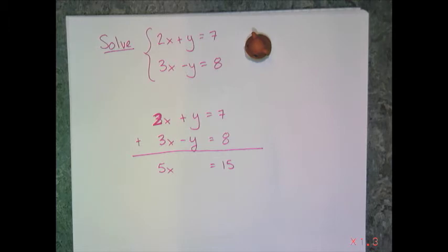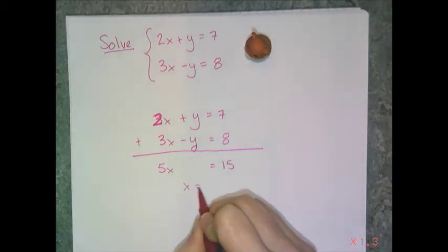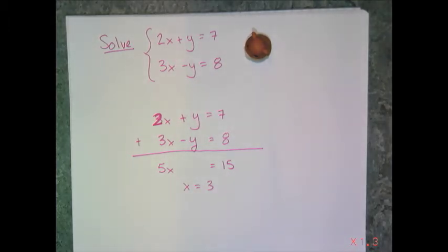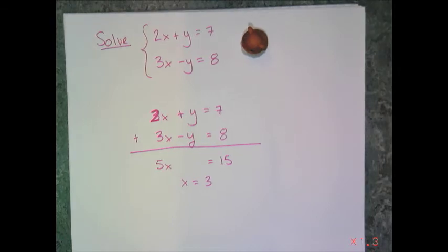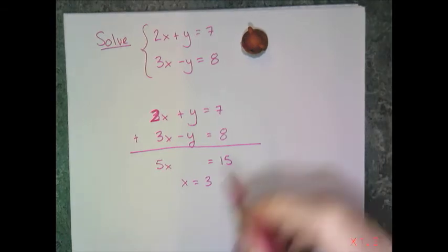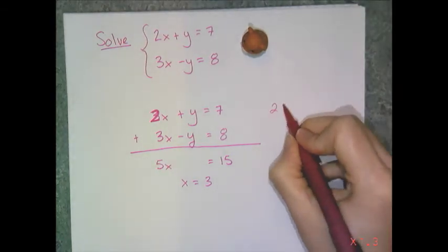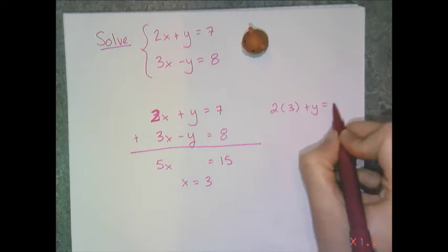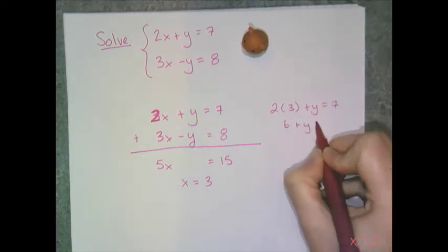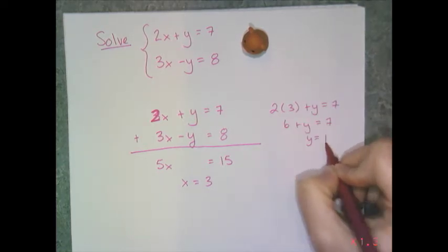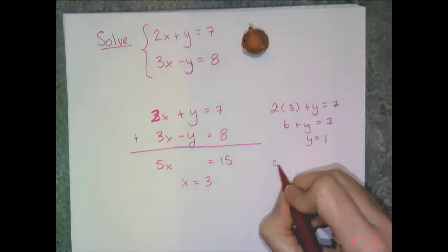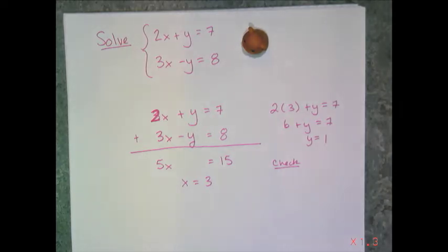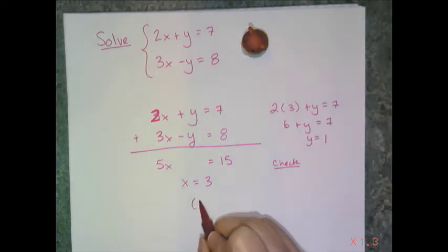So then I get 5x equals 15, and then I get x equals 3. That x equals 3 is half of my solution to my system, so I have to go back and find y. I'll take the first equation: 2 times 3 plus y equals 7. So 6 plus y equals 7, which means y has to equal 1. If this is actually the solution to my system, I can check and verify. It looks like the answer is going to be (3, 1).